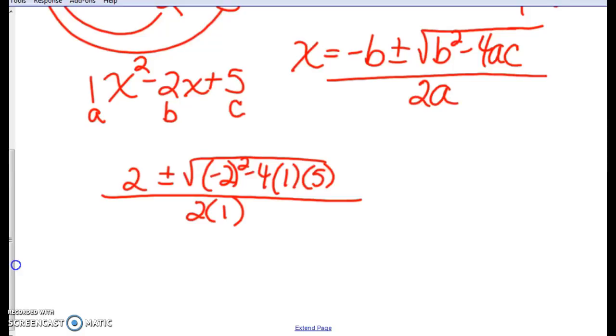Now let's simplify that. This is going to give me 4 minus 4 times 1 times 5. It's going to be minus 20. So it's going to have a negative underneath the radical. So I know the square root of 16 is 4. But who remembers what happens when you've got a negative underneath? Matt? We're going to need that i.